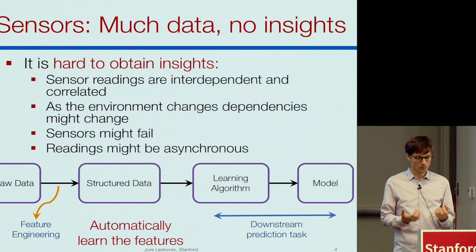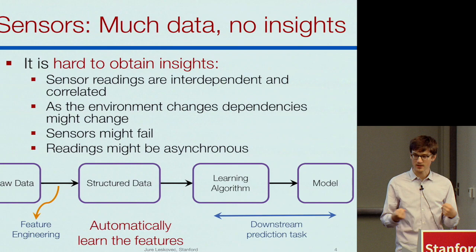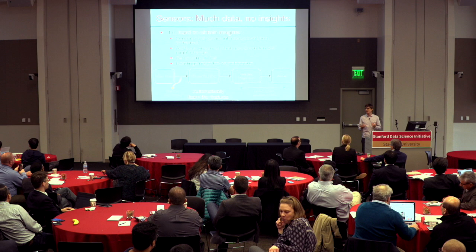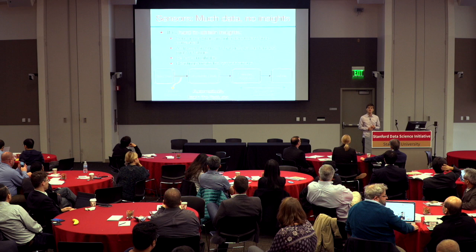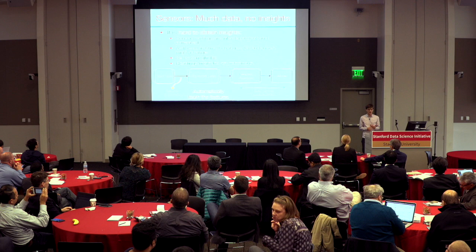It's very hard to obtain insights because sensor readings are interdependent and correlated. External pressures and changes affect how sensors read and how they relate to each other. Sensors might fail, and readings can be asynchronous — not all sensors are synchronized, reading at different frequencies. This creates two big challenges: how to build analytics that let you understand what is happening, and how to do machine learning without being stuck doing feature engineering forever.